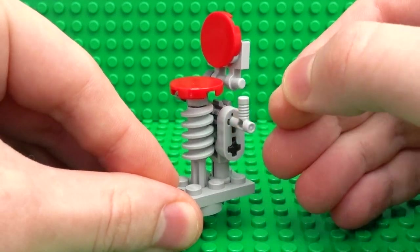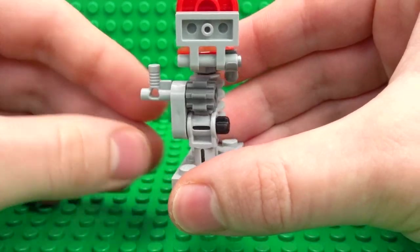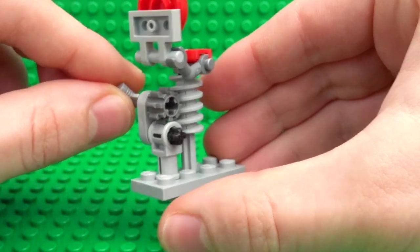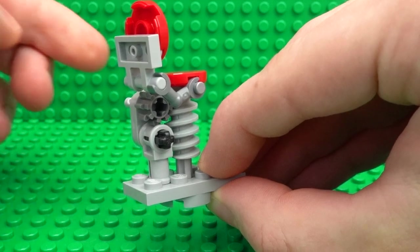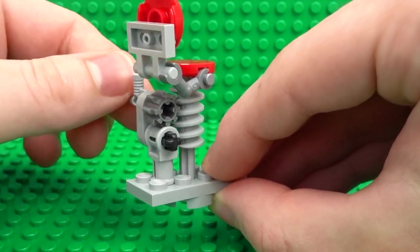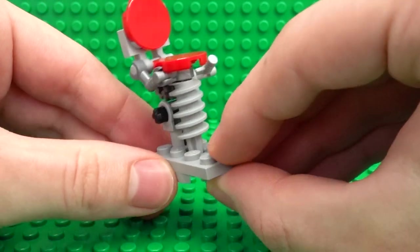And to raise and lower you just raise it up and that in turn raises that worm gear. And you can raise it up to about here before it starts to get a little bit wobbly. That's still a very decent height, especially in the minifigure scale.